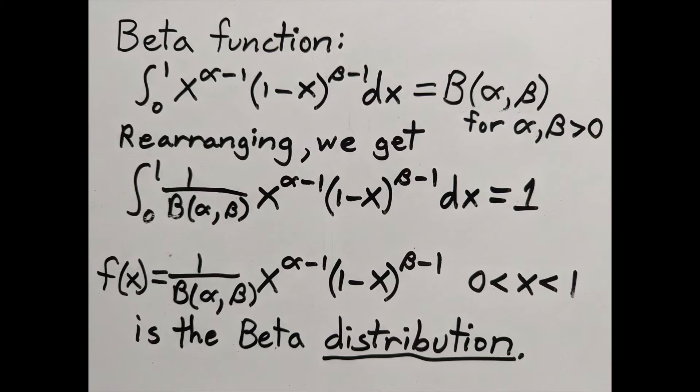It's a constant times x to the alpha minus 1 times 1 minus x to the beta minus 1. Notice that if you plug in alpha equals 1 and beta equals 1, you get a constant in the integrand. So the beta function equals 1 and the beta distribution equals 1, which means it's a uniform distribution.